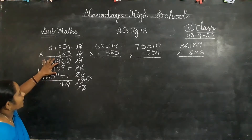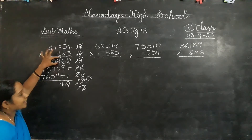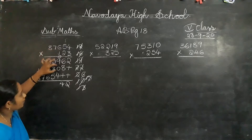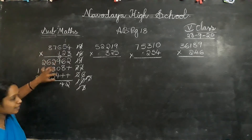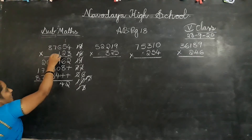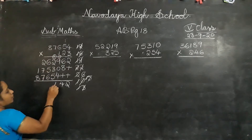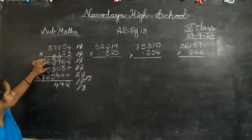Look here. 9 plus 1 carry is 10. 10 plus 0? 10. 10 plus 4? 14. 1 is carry forward, 4 is in the answer place.